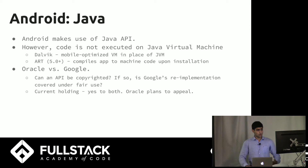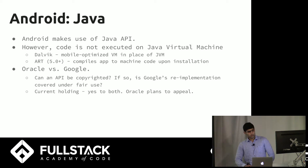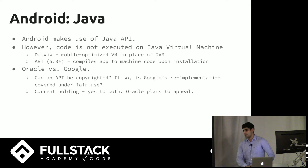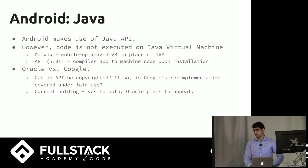The way it works is different depending on how new the version of Android you have is. The older versions, instead of using a Java Virtual Machine — which is what the desktop version uses and is how it's portable everywhere — they use Dalvik, which is a mobile-optimized version. And as of Android Lollipop and further, they actually have what's called ahead-of-time compilation. So it's Java that's compiled to machine code and run natively, and that happens when you install the app.